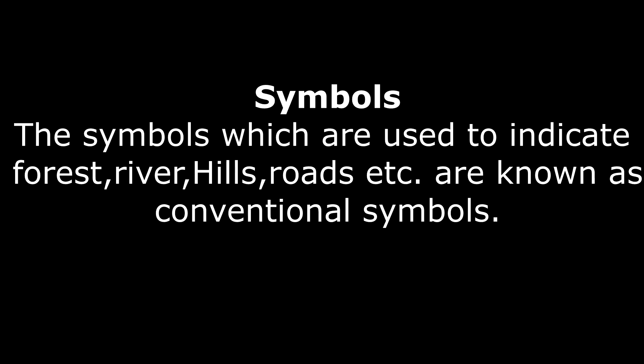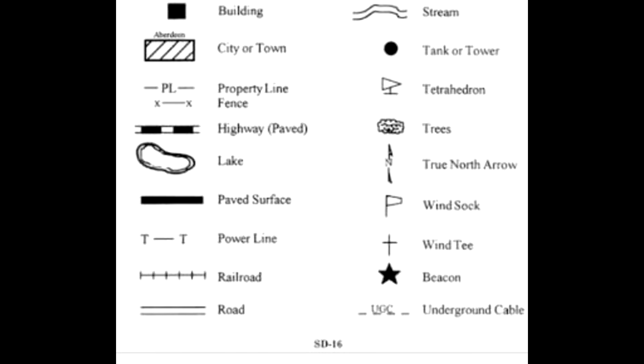Now about symbols. The symbols used to indicate forests, rivers, hills, roads, etc. are known as conventional symbols. With the help of such symbols on a map, we can read a map of any country without knowing the language of that country. The symbols make map reading easy and quick.